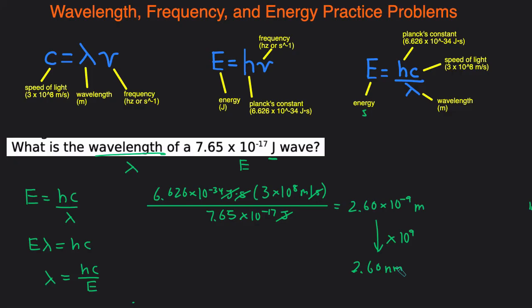So that's a couple of problems dealing with wavelength, frequency, and energy. The key is to read the problem, identify what you're given and what you're solving for. If you're given wavelength and frequency, use the first equation. If you're dealing with energy and frequency, use the second equation. And if you're dealing with energy and wavelength, use the third equation.